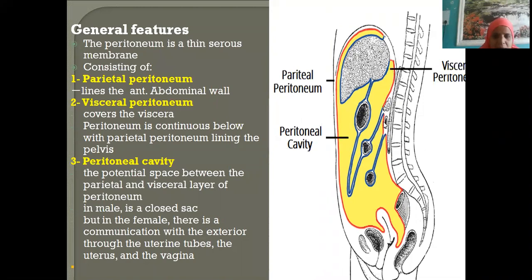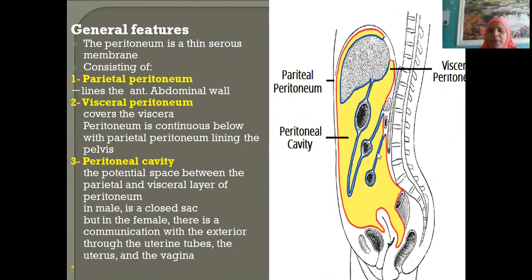The peritoneal covering continuing over the transverse colon is called the transverse mesocolon. The peritoneal reflection then continues on the posterior abdominal wall, coming down to enclose the small intestines. The peritoneal covering of the small intestines is called the mesentery — this term will be repeated many times during the lecture.